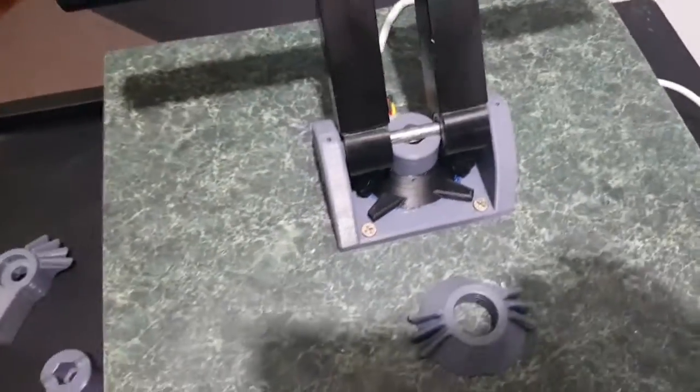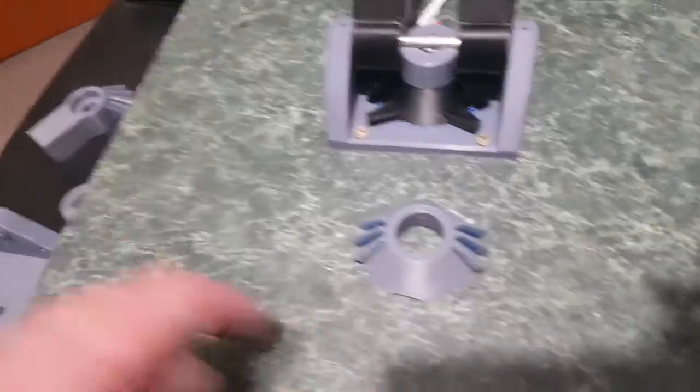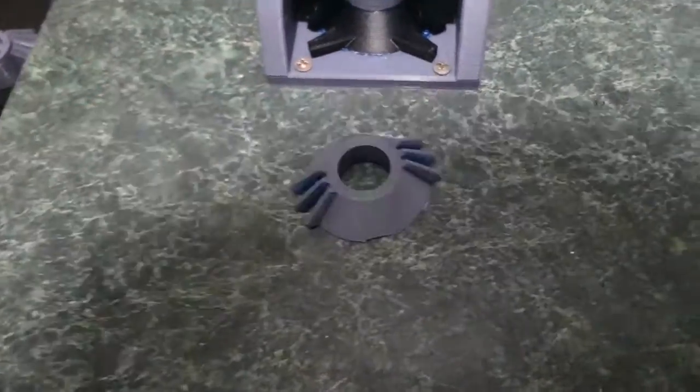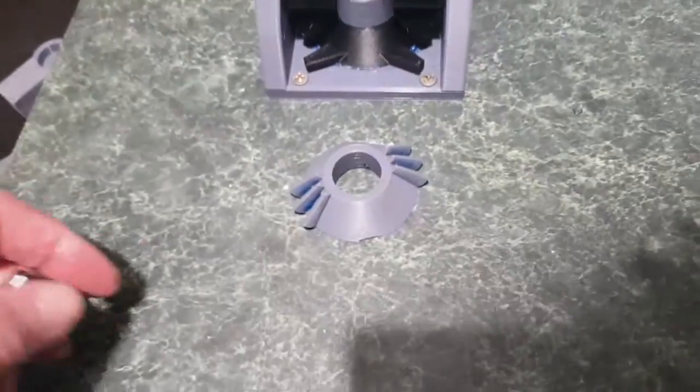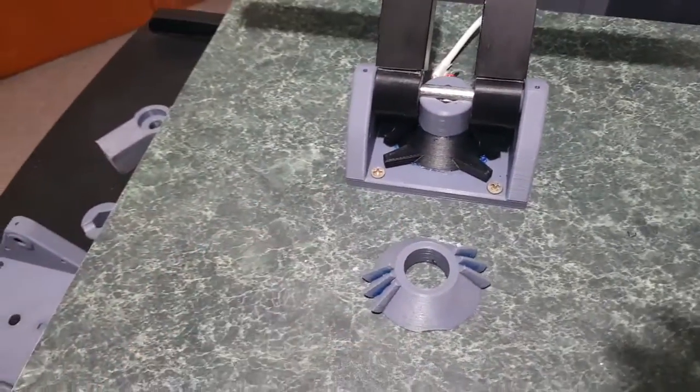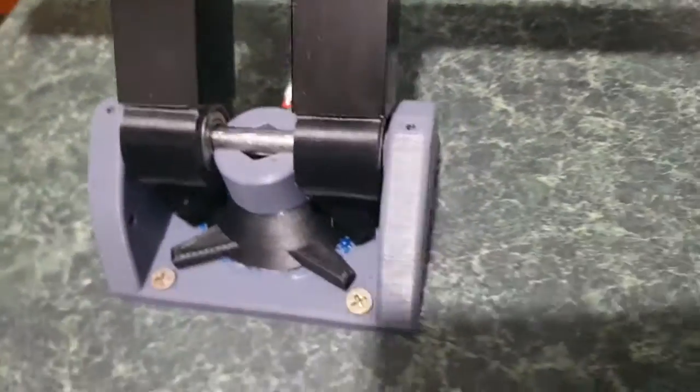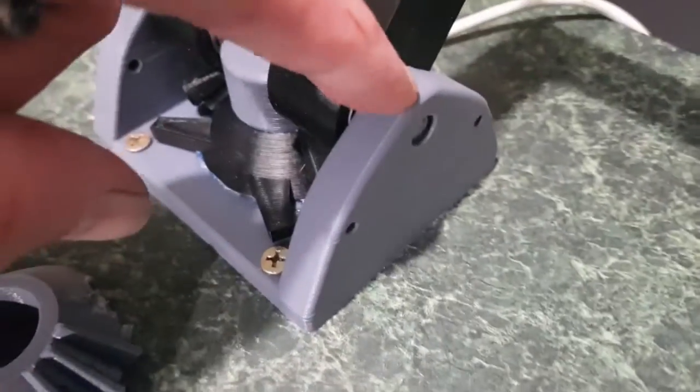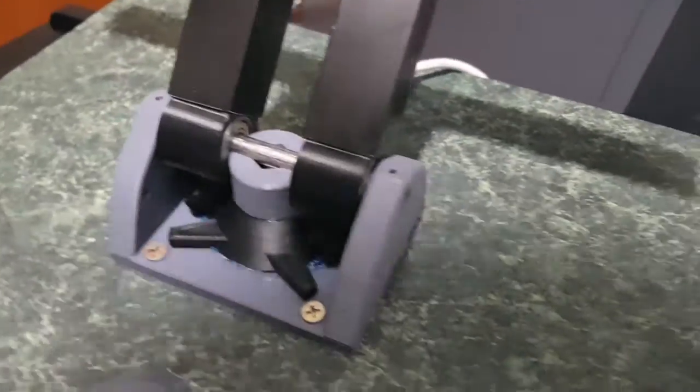All it uses to mount it are standard 608 bearings for skateboards - two in there, two in each leg, so a total of six bearings are required. There's some eight millimeter rod that runs through the middle and that can be locked with a screw there if required.